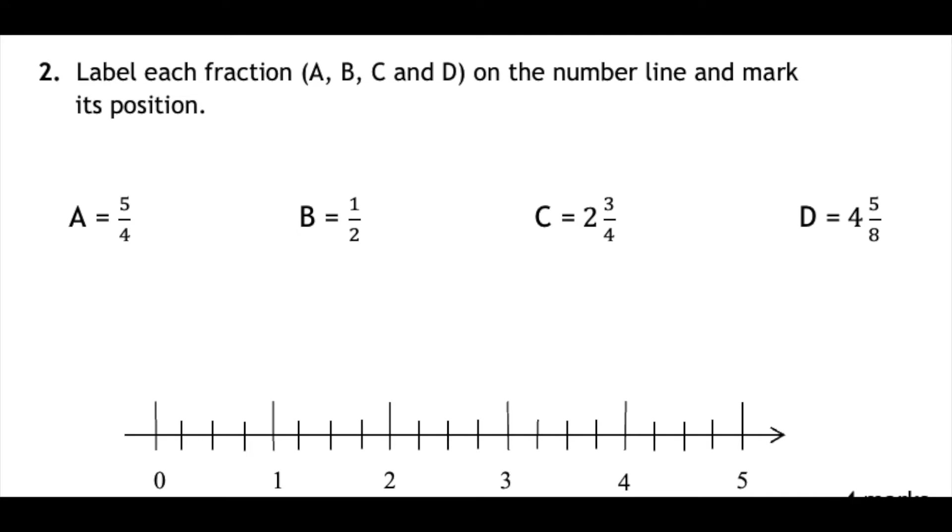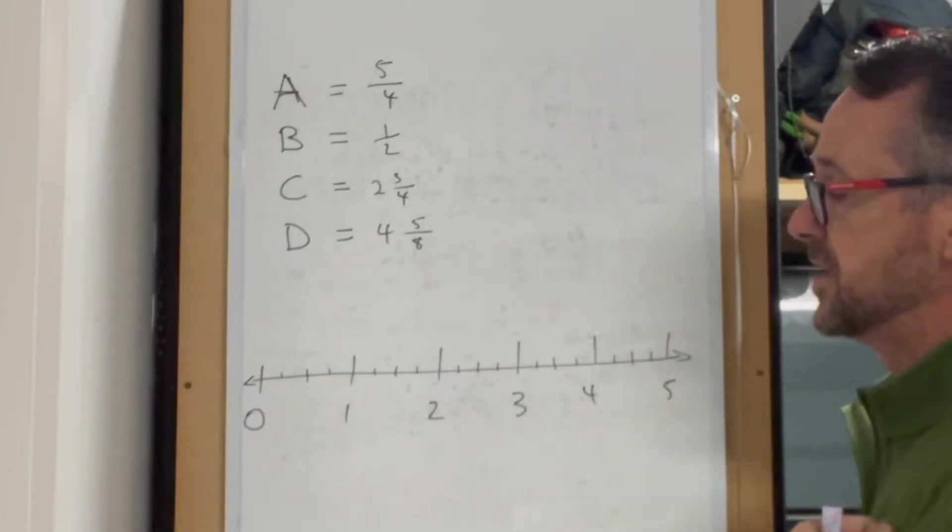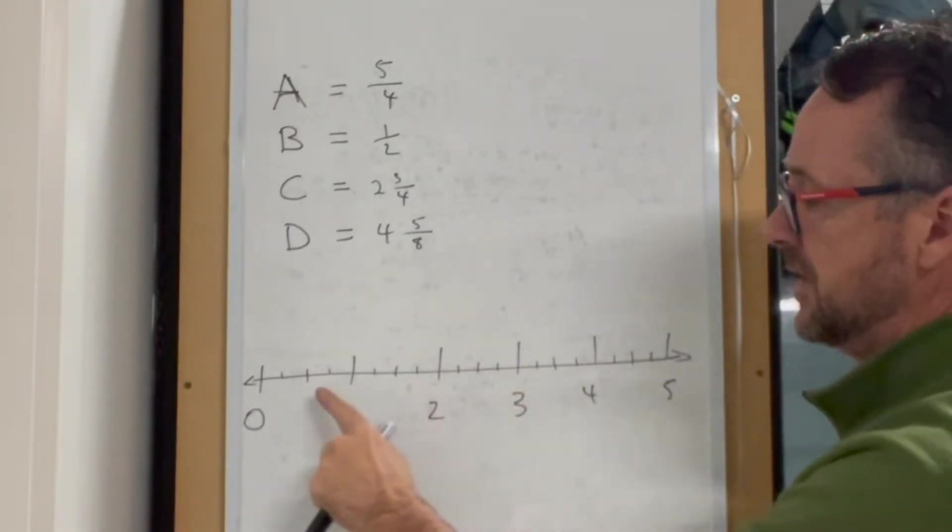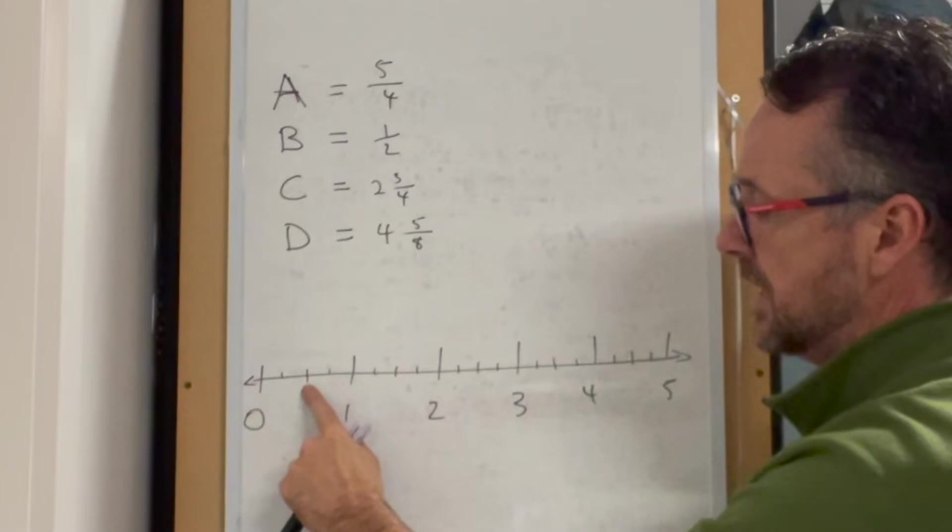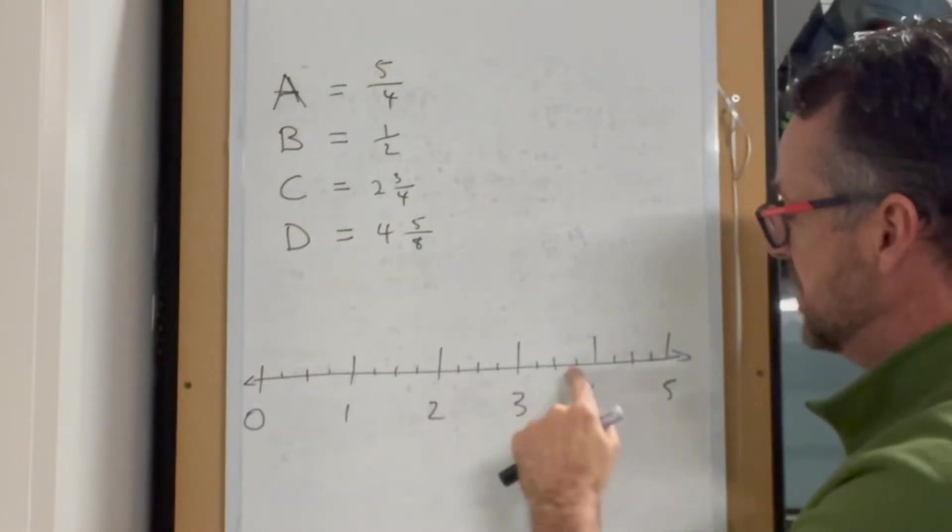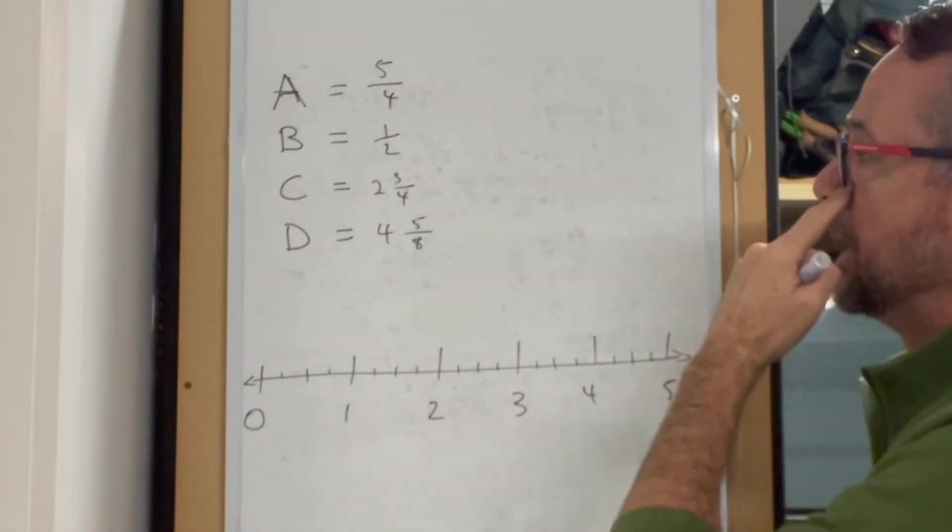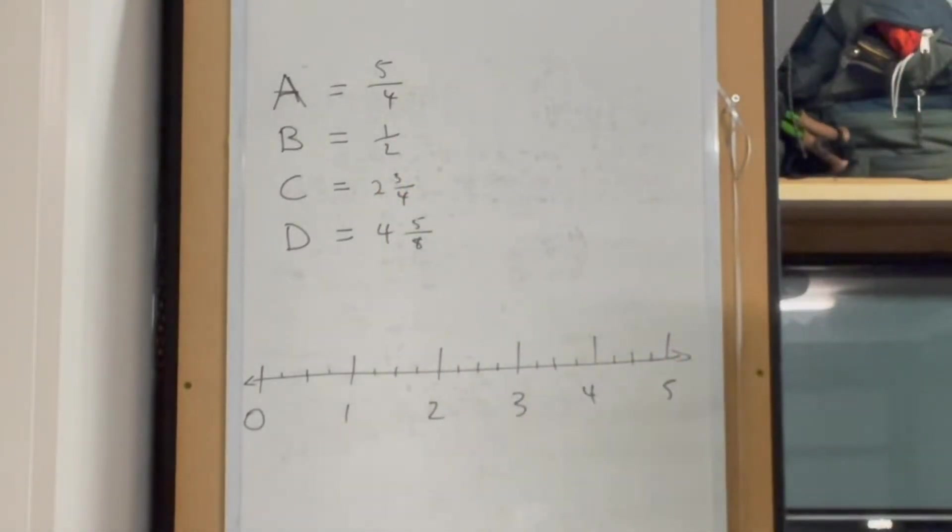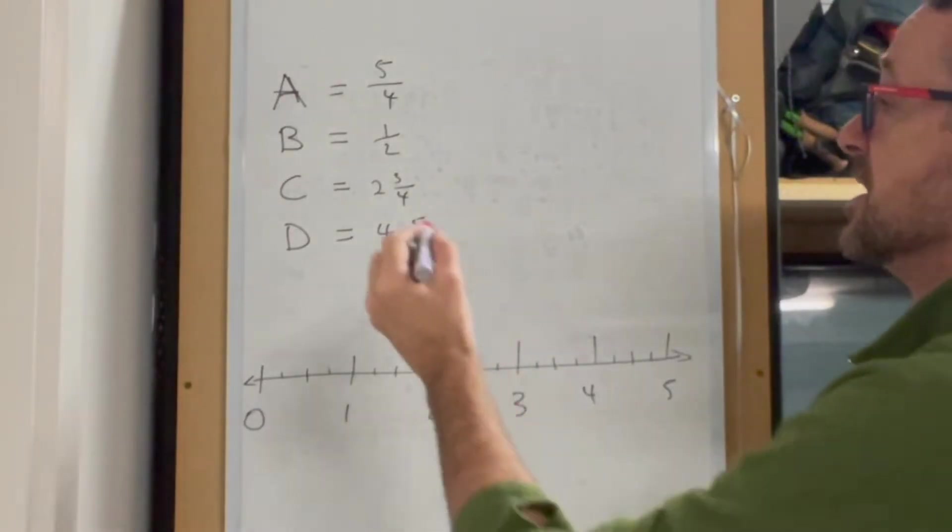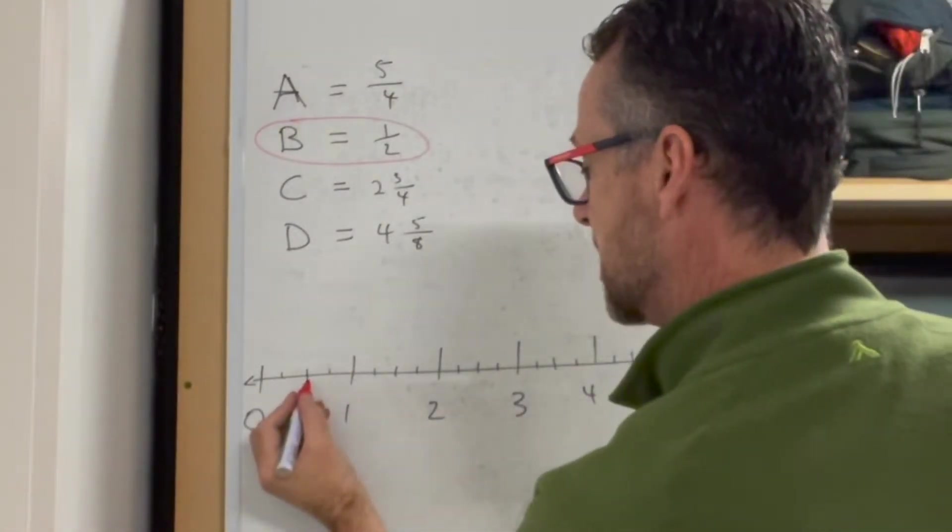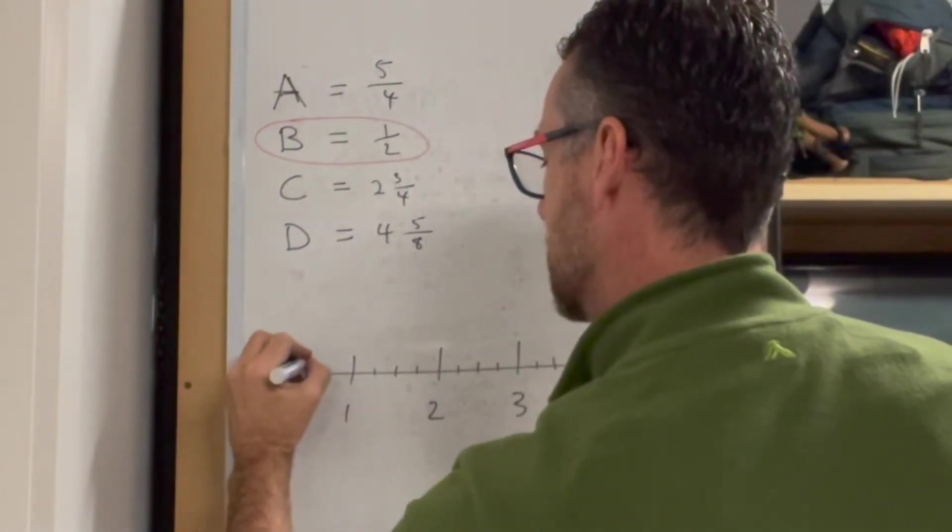This question asks us to put these 4 letters on the number line. First, look at the number line - it goes from 0 to 5 with half and quarter markings. Start with the easiest: B equals one half, so B goes here.